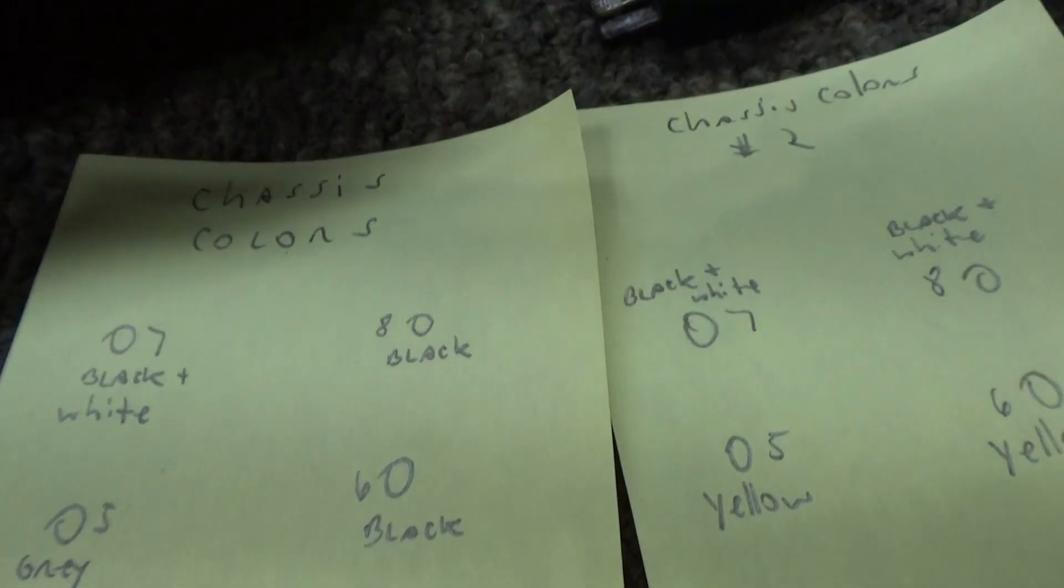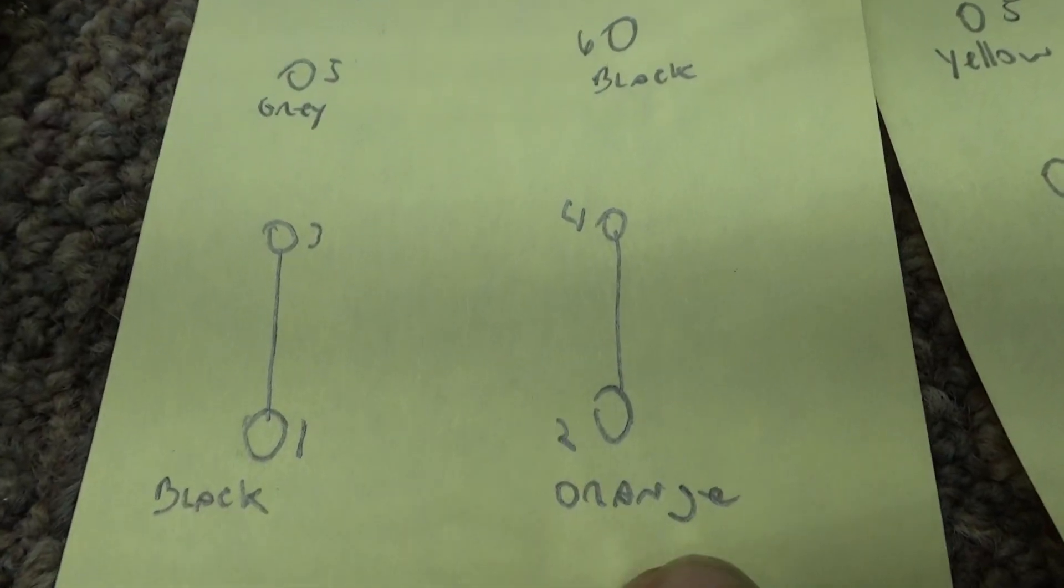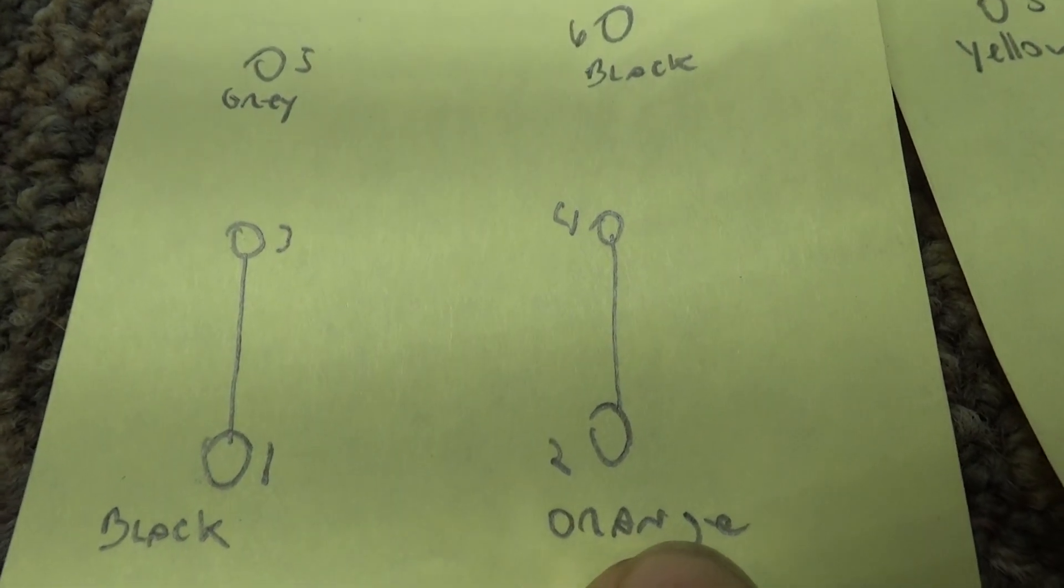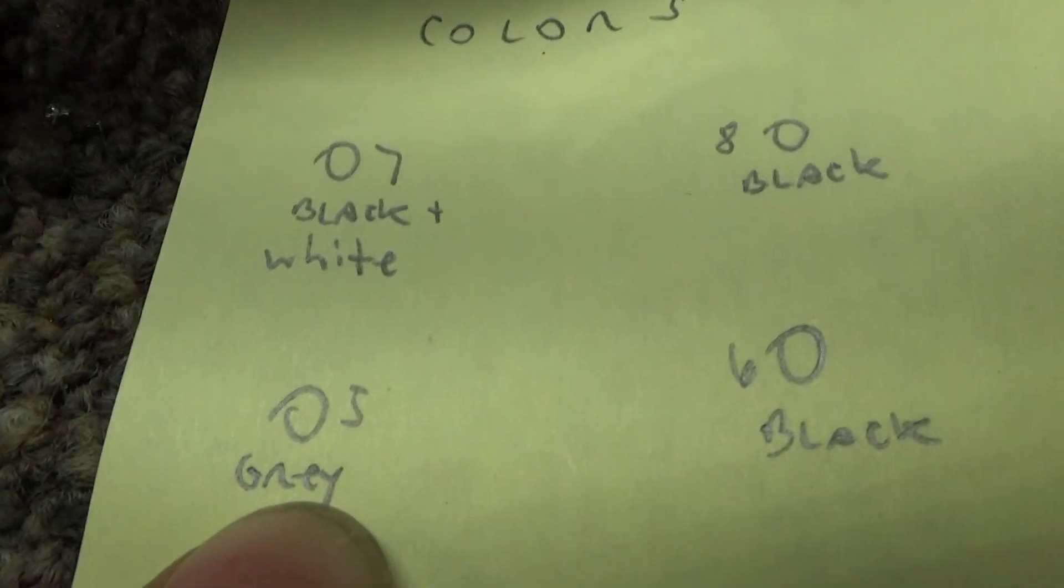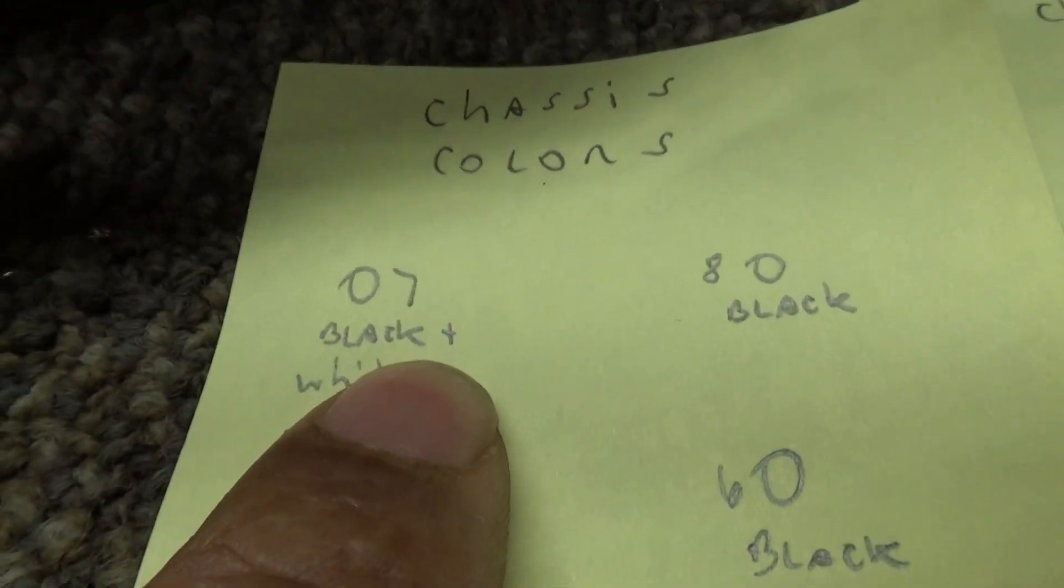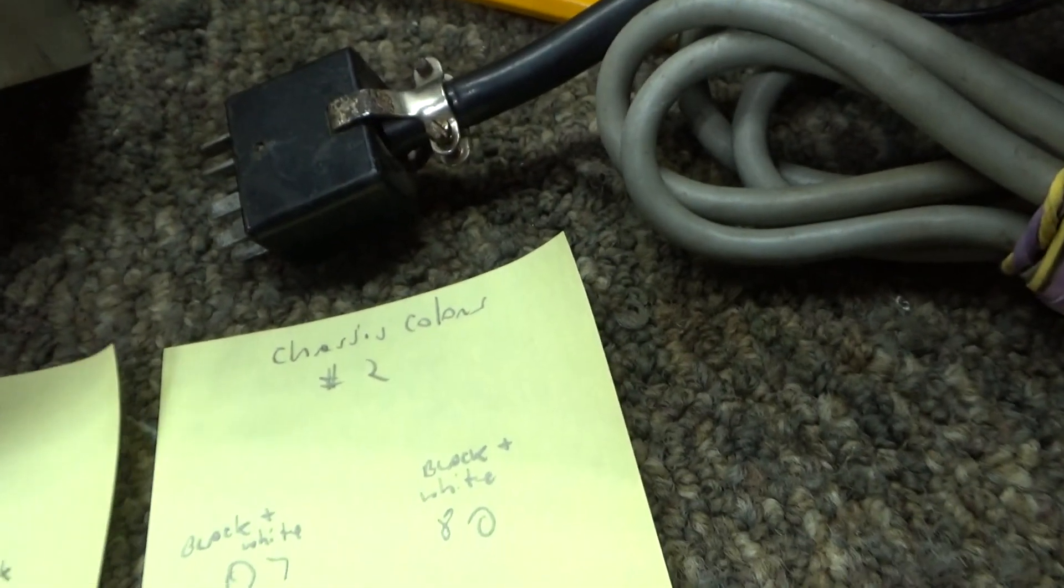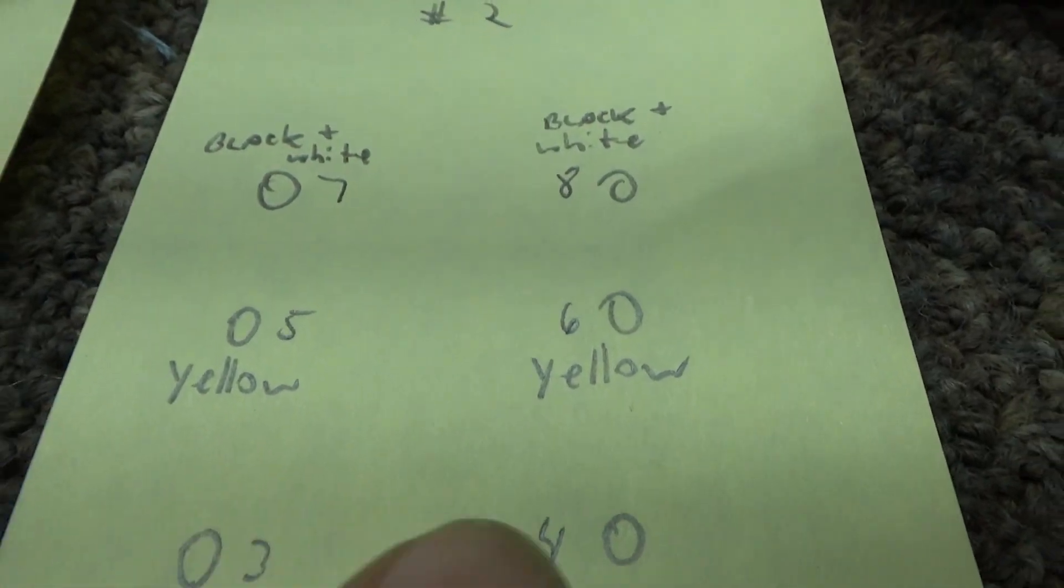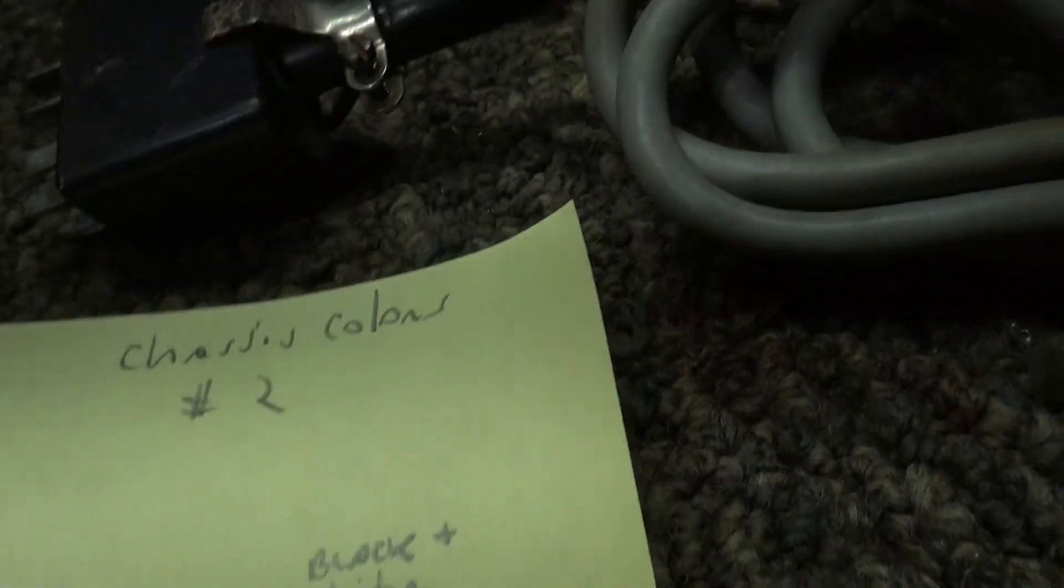And then the chassis side, I found two different colors already. On one I found black and orange for one, and orange for two, gray for five, black for six, white and black for seven, black for eight. But then on another one, which is this one actually, I found green for one, white for two, yellow and yellow for the high voltage.